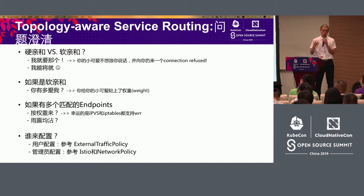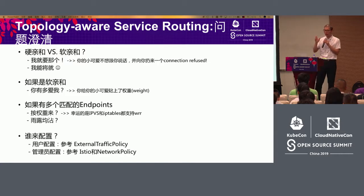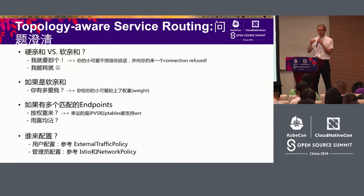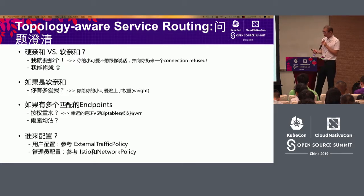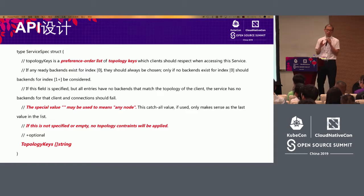Thinking about all the strategies — who will do the configuration? For external traffic policies, it's the user. For Istio and network policies, it's the administrator, using a gateway control with a name list. Whichever parts are matched, there will be a constraint on them. Alternatively, it is written directly on the service to add a strategy. Here is the API design — defined directly on the service spec, not via gateway control, as a direct constraint for a specific service.